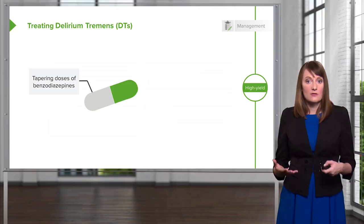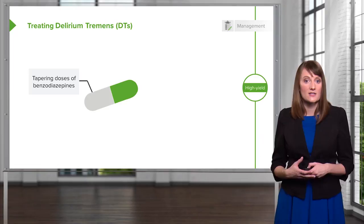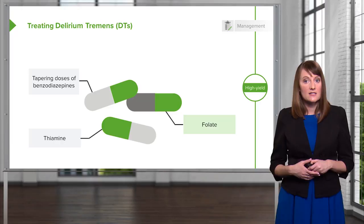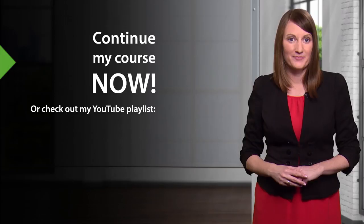When treating DTs or delirium tremens, you want to give a tapered dose of a benzodiazepine to help inhibit the central nervous system so it's not quite so excited. You're going to give them the vitamin thiamine, folate, a multivitamin, and magnesium sulfate for any post-withdrawal seizures.